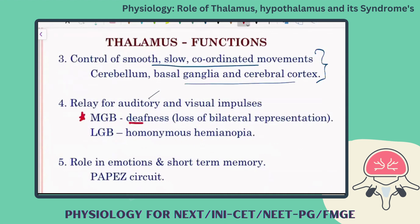The medial geniculate body is for audition, and the lateral geniculate body is for vision. This is a commonly asked question where people make mistakes. A memory tip: for light — use 'L' for lateral geniculate body. The other one — medial geniculate body — is for audition. Remember: lateral geniculate body is for vision.